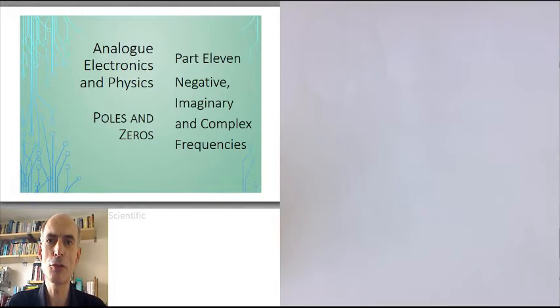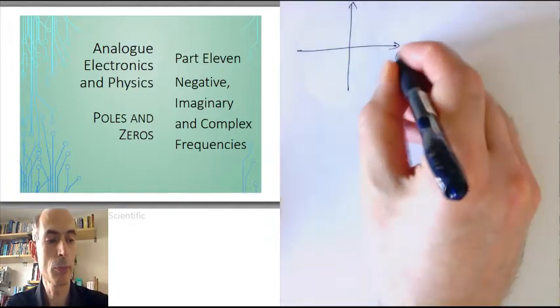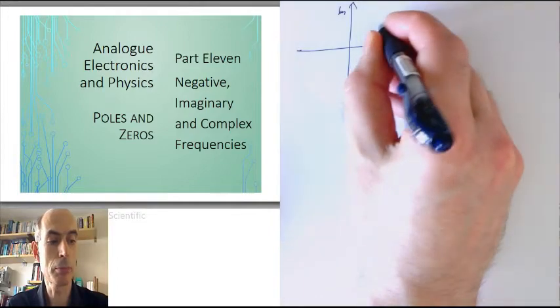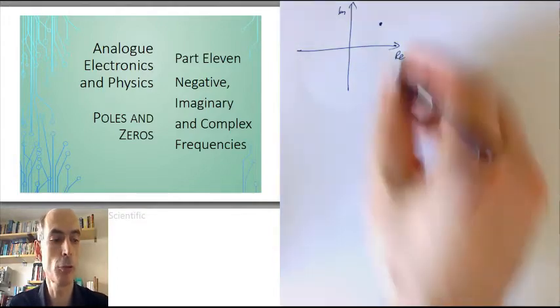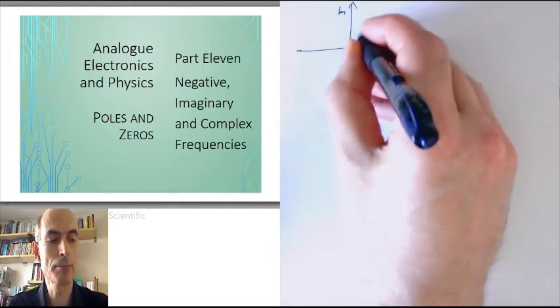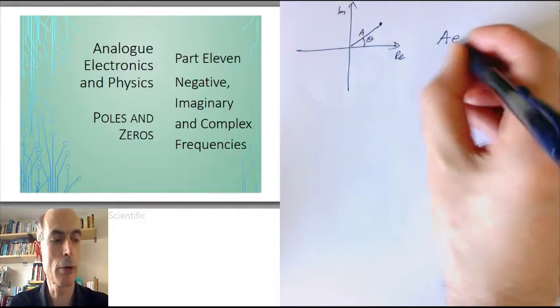However, the oscillations that we're talking about when we're using phasor representations and complex impedances are not real oscillations. They're complex oscillations. They exist in the complex plane. For example, we have an Argand diagram with the real part here and the imaginary part here, then any complex number can be represented in polar form in terms of its magnitude, distance from the origin a, and its phase angle theta, in the form a e to the power of j theta.